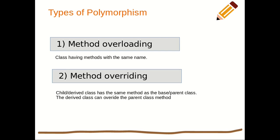In method overriding, a child or derived class has the same method as the base class or parent class, sometimes referred to as a super class. The derived class can override the parent class method by simply changing the content of that particular method.